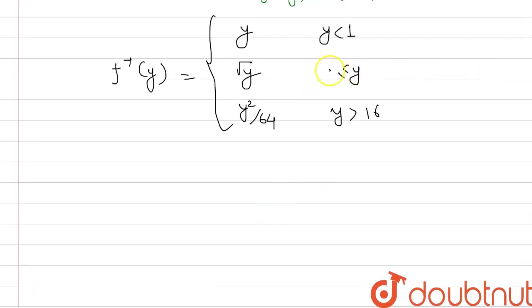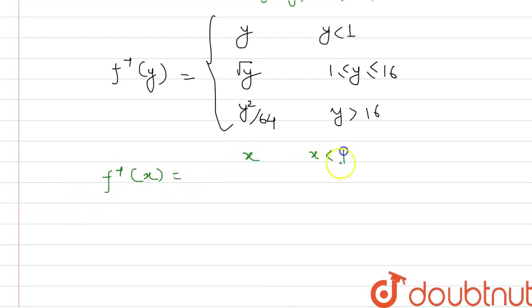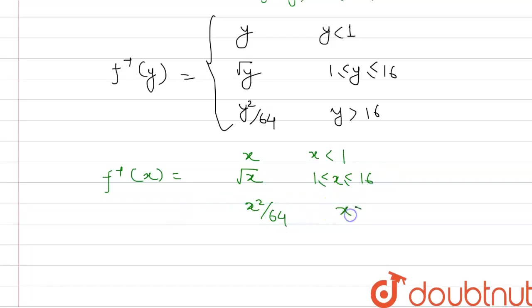Now finally, we replace y with x and get f inverse of x as: x when x is less than 1, √x when x is between 1 and 16, and x²/64 when x is greater than 16. This is our required answer.